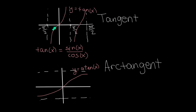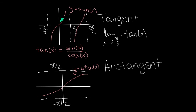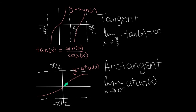To graph arctangent, we focus on the center piece of the tangent graph and flip it over the y equals x line. The vertical asymptotes flip and become horizontal asymptotes at y equals pi over two and y equals negative pi over two. The limit as x approaches pi over two from the left on the tangent graph: the height goes to positive infinity (from the right it would be negative infinity). The limit as x goes to infinity of arctangent is pi over two, since the function approaches that horizontal asymptote.